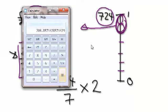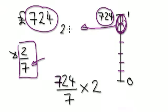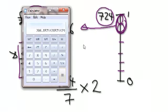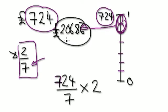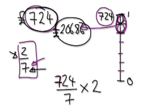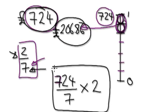That equals two hundred and six pounds and eighty-six pence. So if you're giving two sevenths away to charity, this is the amount that goes to charity. All you have to do is get your whole amount, split it into seven equal parts, and times by two — so basically it's this calculation.